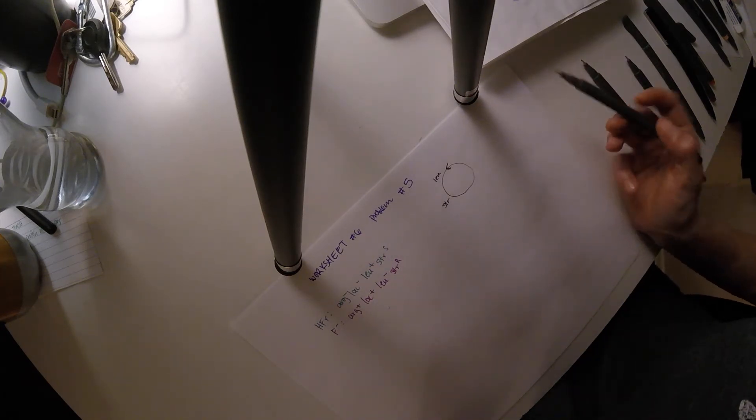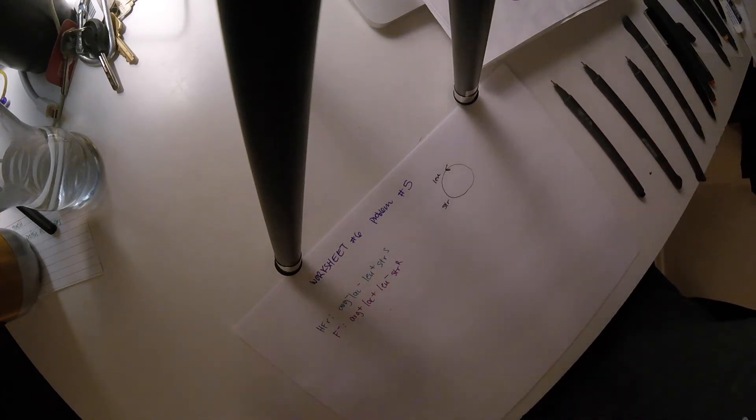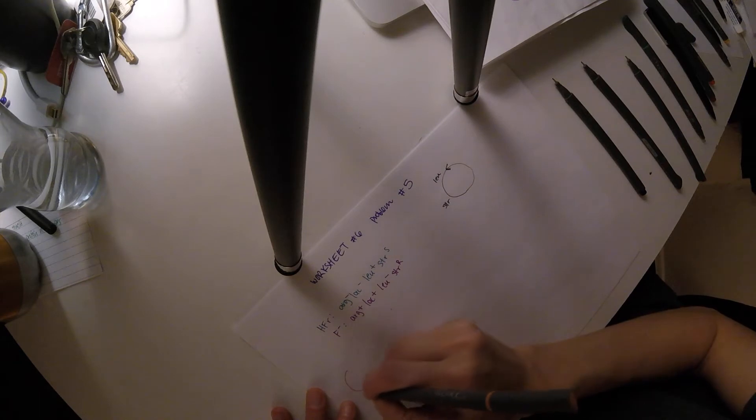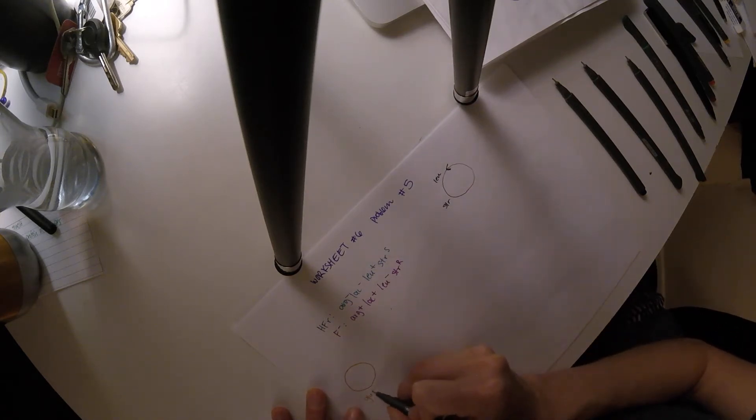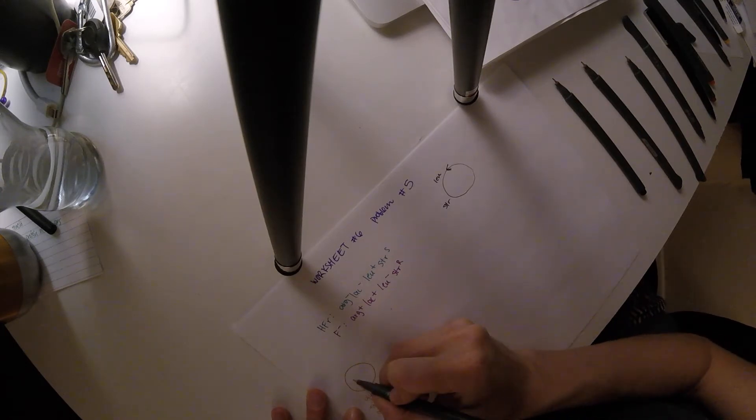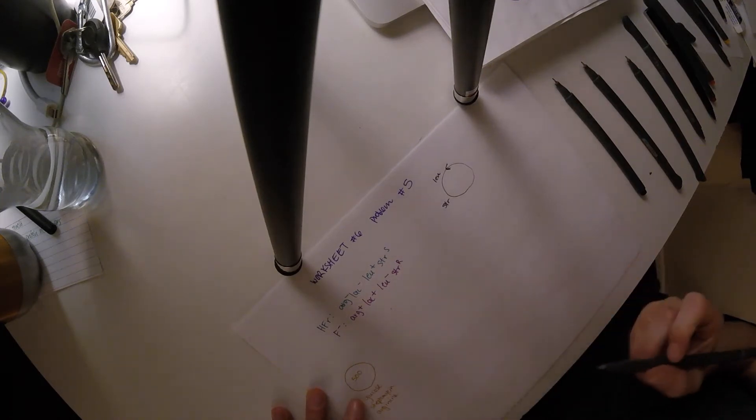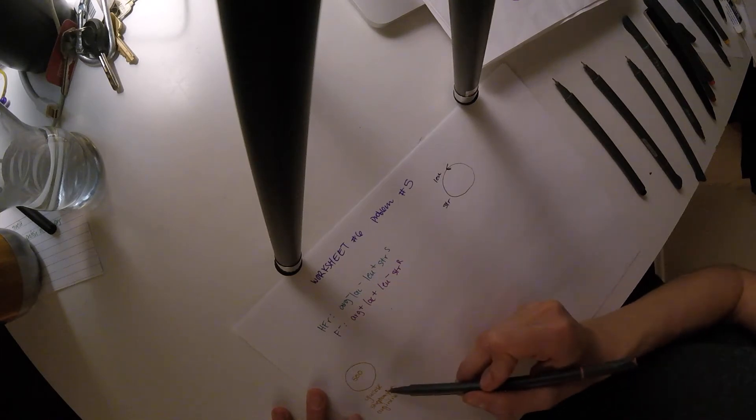And what they're telling us is that on a plate, we have 500 colonies, and this plate contains glucose, streptomycin, and arginine. So we have 500 colonies, and this was plated on glucose, streptomycin, and arginine.